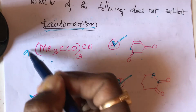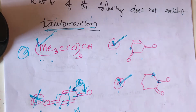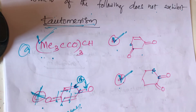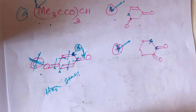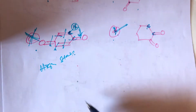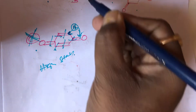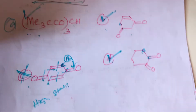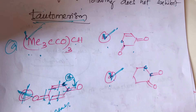So the correct answer is: compound B participates in tautomerism, compound D participates in tautomerism, and compound A also participates in tautomerism. Now let's look at how to write the structure of compound A.